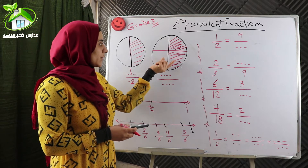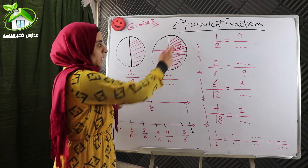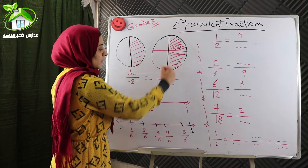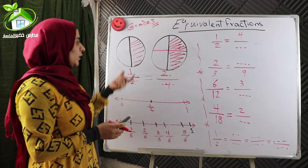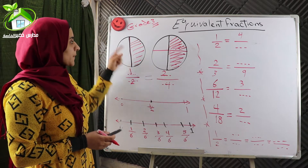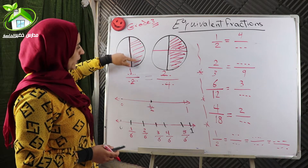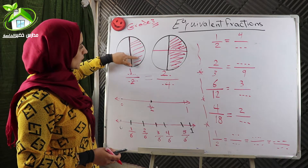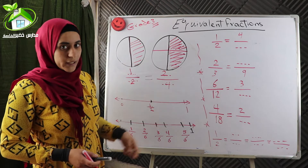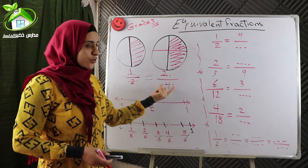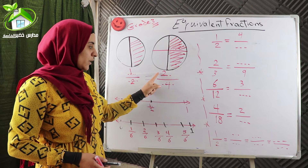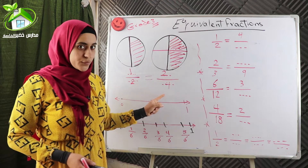The second shape — how many colored parts? Two colored parts. All parts are four. If we look at the two shapes, we will find that the two shaded parts are equal. So the two fractions are equal: one over two equals two over four.